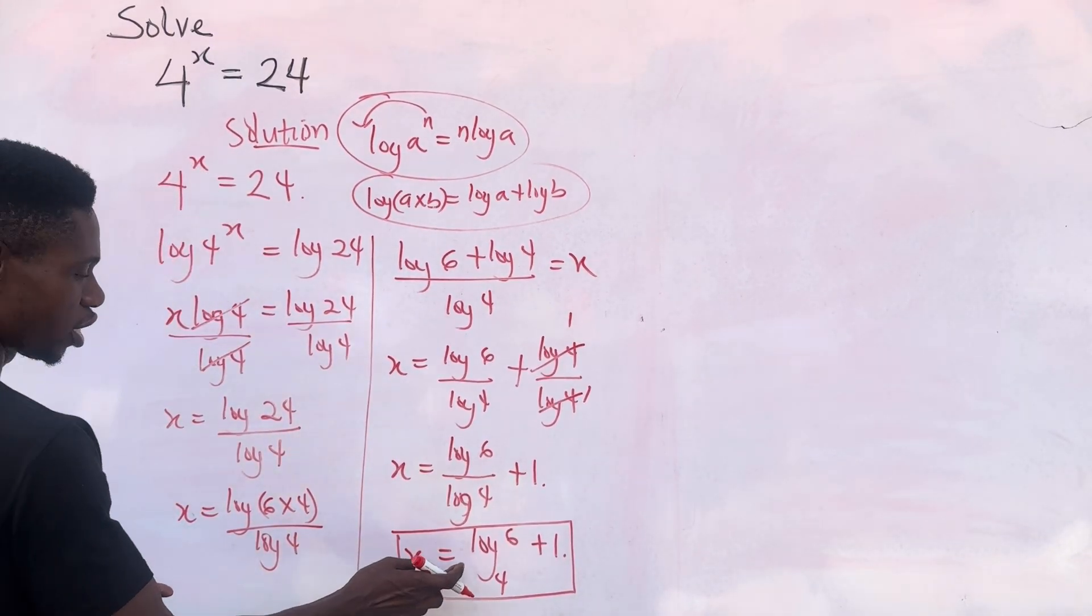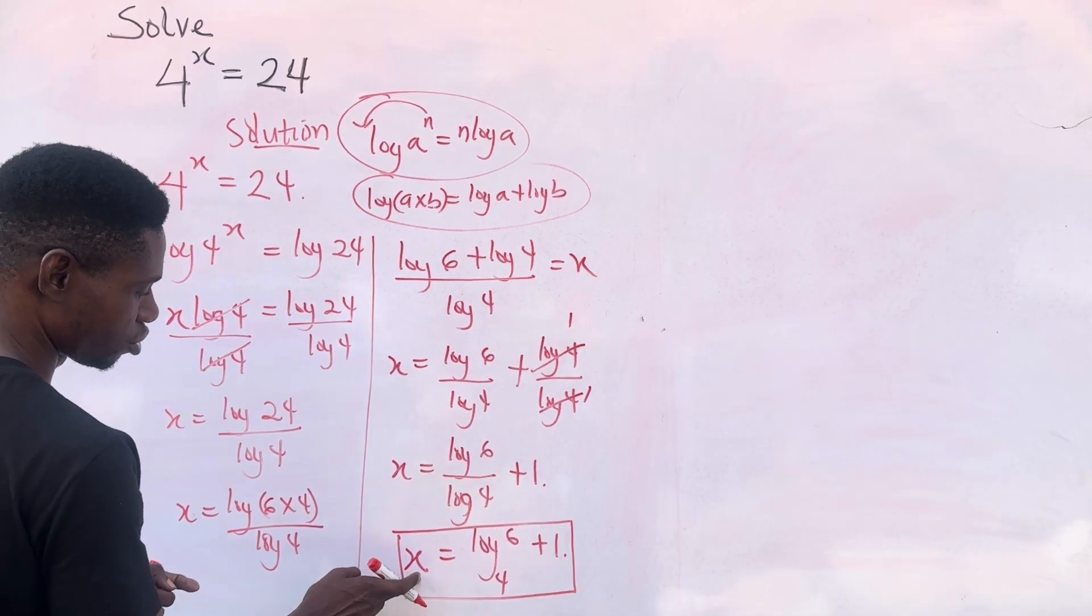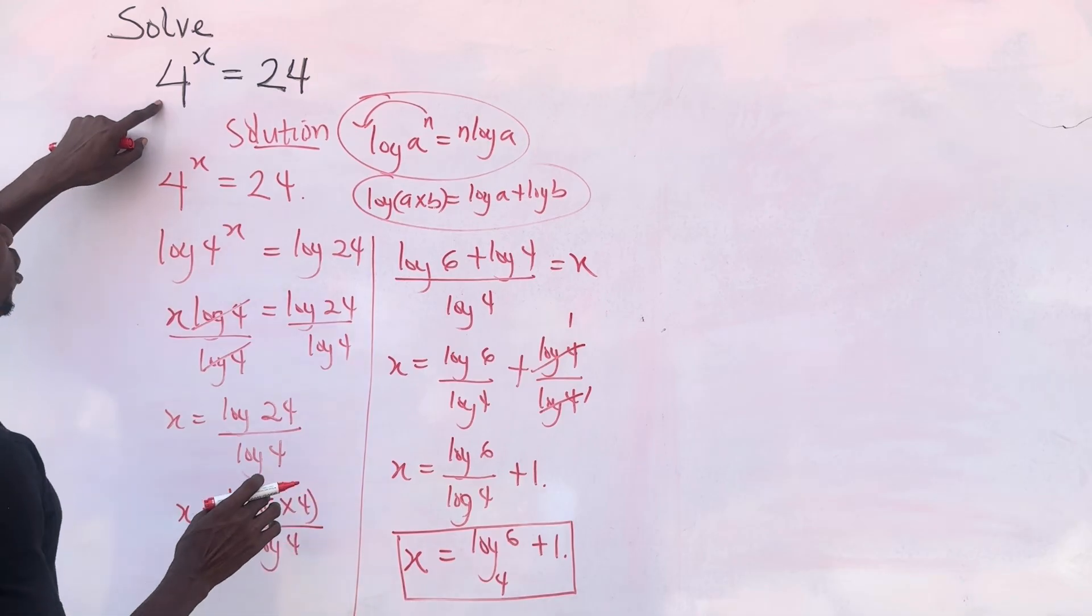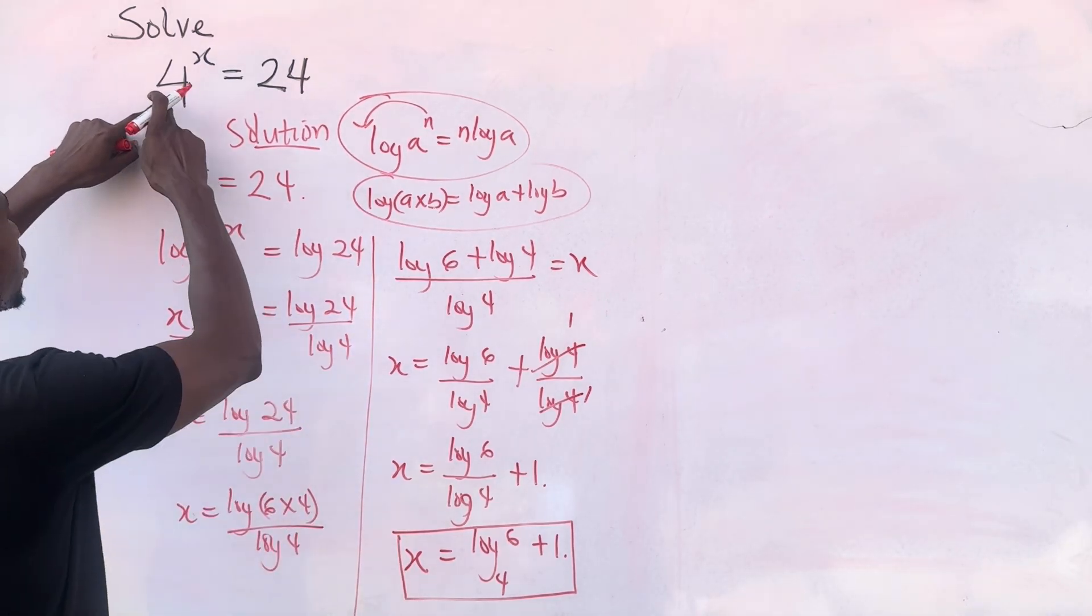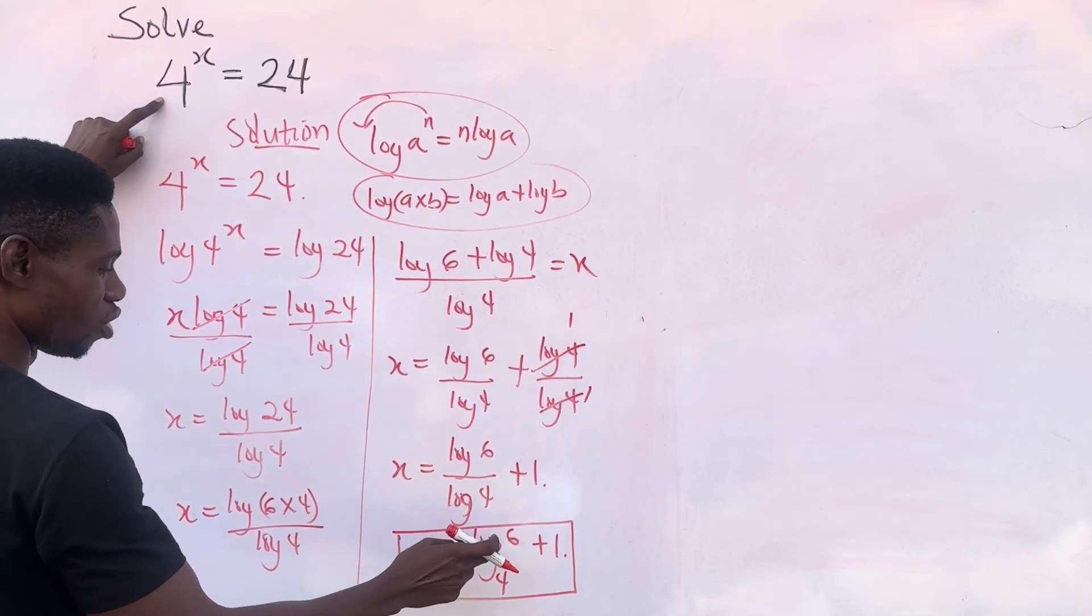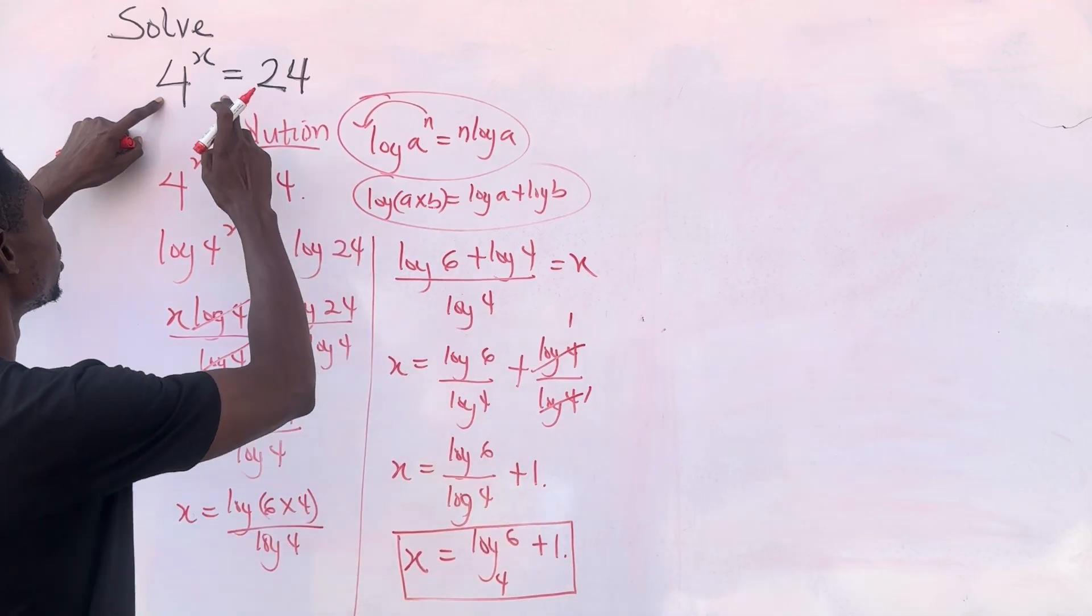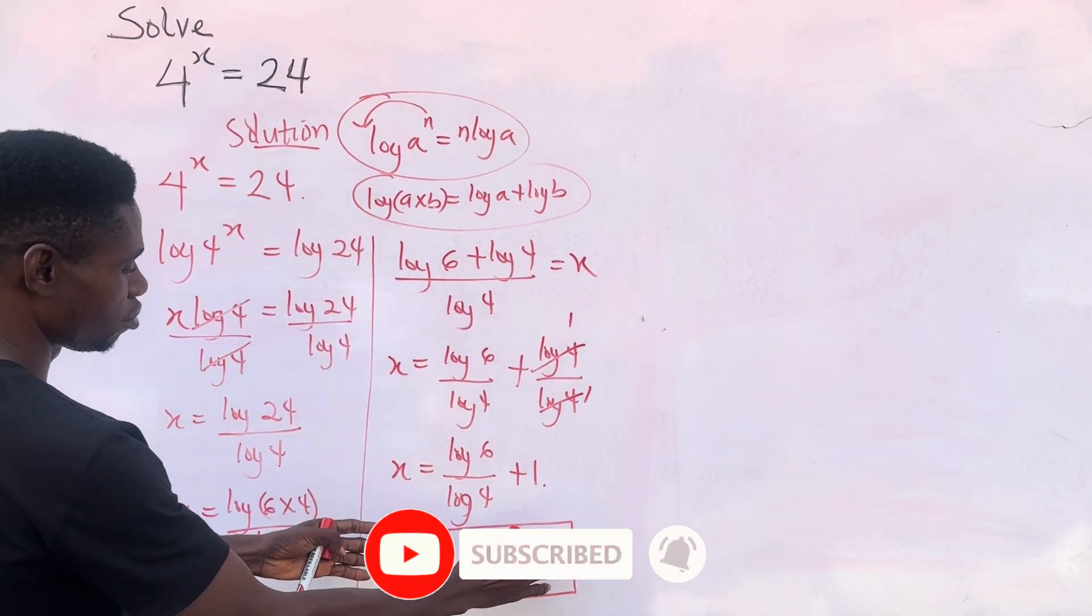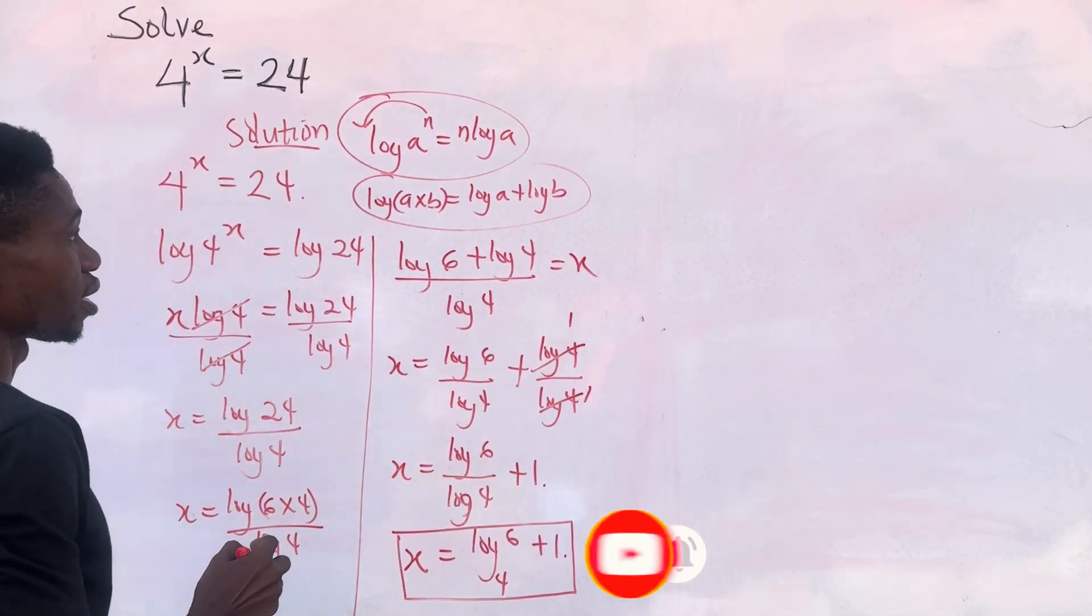But now we need to check to see if this is the correct answer. So let's come back to our question and replace x with log 6 base 4 plus 1 to see if we'll get 24. So let's prove now.